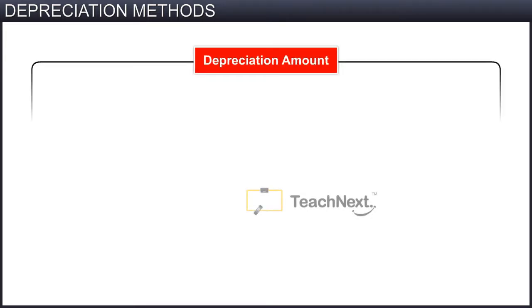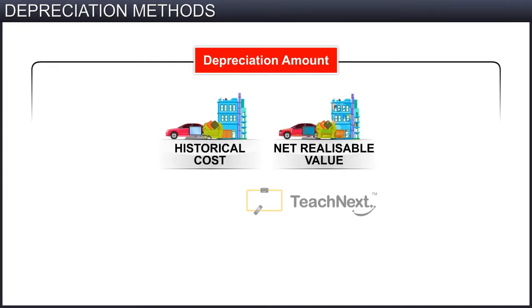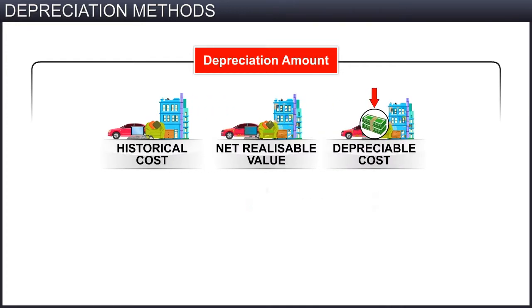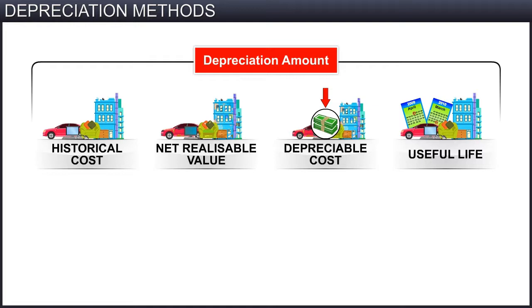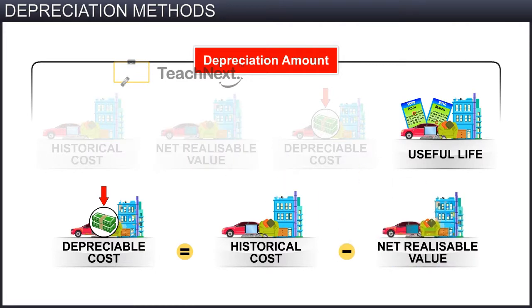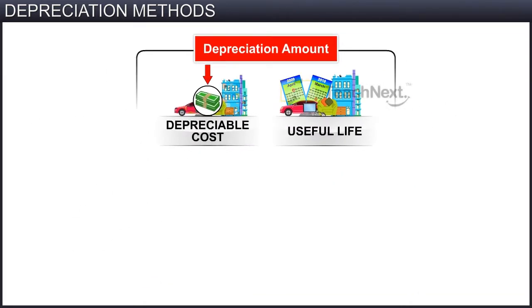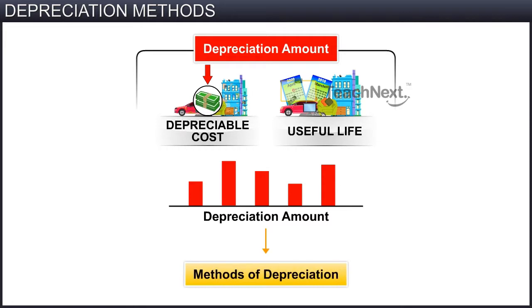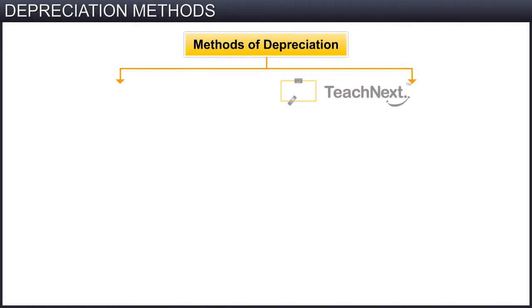The depreciation amount to be charged depends upon four parameters: historical cost of the asset, net realizable value, depreciable cost, and useful life of the asset. Since the depreciable cost is the difference between the historical cost and the net realizable value, the depreciation amount mainly depends upon the depreciable cost and useful life of the asset. Further, the depreciation amount varies based on the method of depreciation selected.